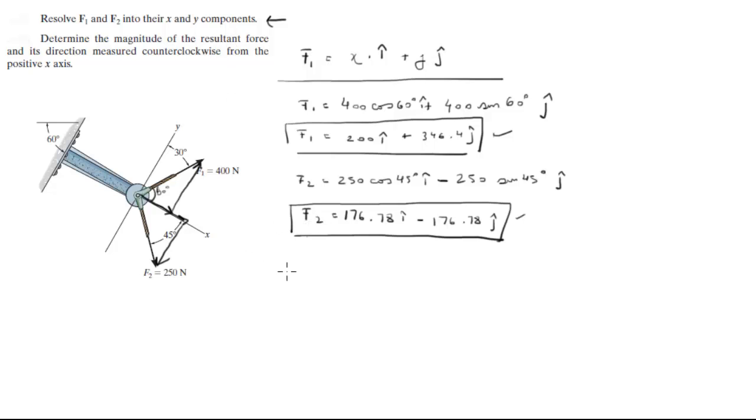The second problem, which is determine the magnitude of the resultant force, all you got to do is add these two together. You know that FR is equal to F1 plus F2, which is equal to, you just got to add the I with the I and the J with the J. And when you do, you're going to get that this is 376.78 I plus 169.62 J.